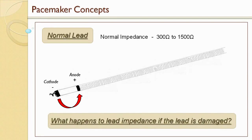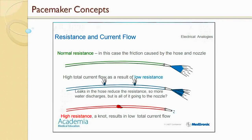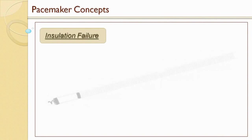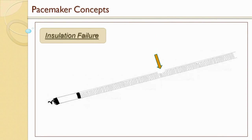But what happens to lead impedance if the lead is damaged? Looking at the hose analogy, the hose has developed cracks or cuts in the side allowing water to spill out. Because of this extra water spilling out, the hose has a high total current flow as a result of low resistance. This is very similar to an insulation failure. A crack could form in the insulation of the lead over time, or the lead could get a scrape or abrasion. In the case of an insulation failure, if it's bad enough, the impedance measurement will usually be less than 200 ohms.